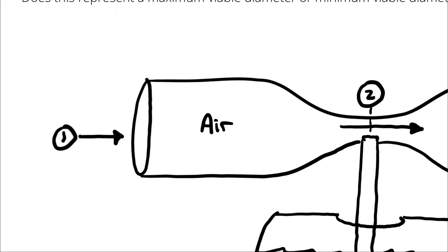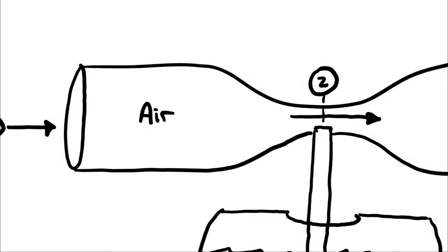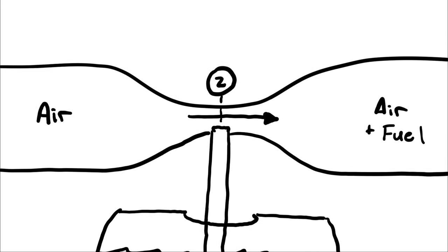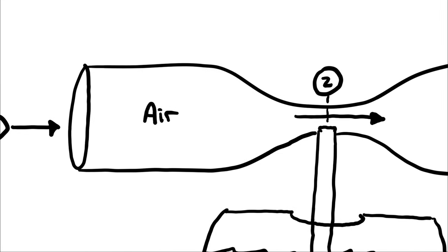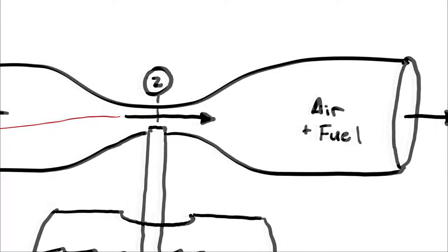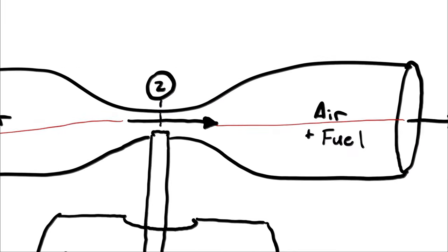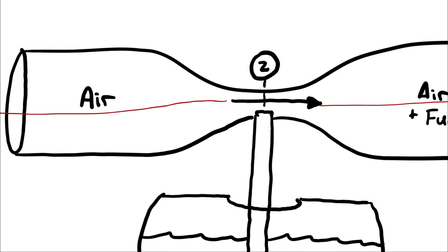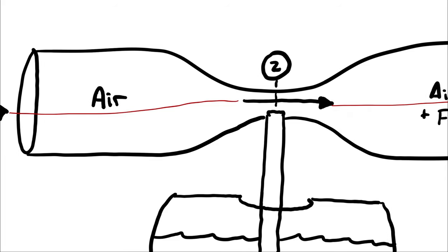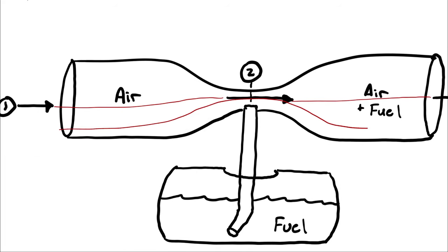Let's begin with a few assumptions. First, I recognize that I have air flowing in, then a converging cross-sectional area that then diverges. I'm going to assume that states 1, 2, and 3 are all connected by a streamline. The air, and then the air and fuel mixture, is all flowing along a path parallel to the velocity of the air at every point. That streamline would essentially be in the center, but it doesn't really matter — we're just saying that states 1, 2, and 3 are all along the same streamline.